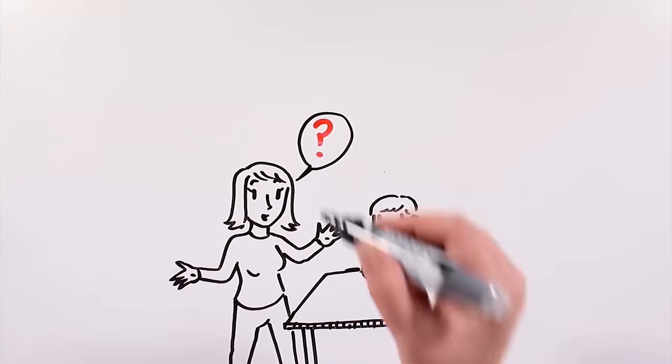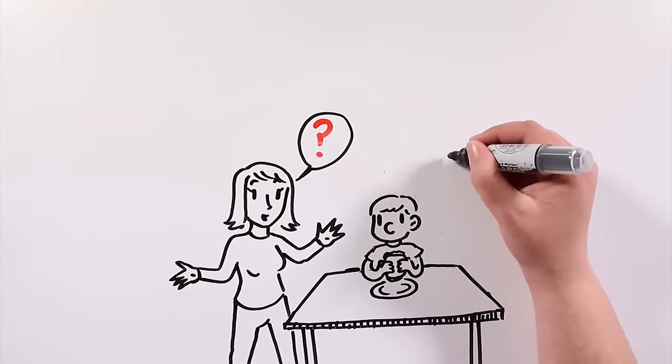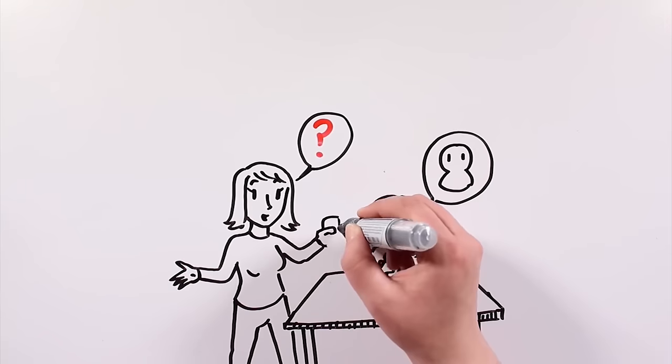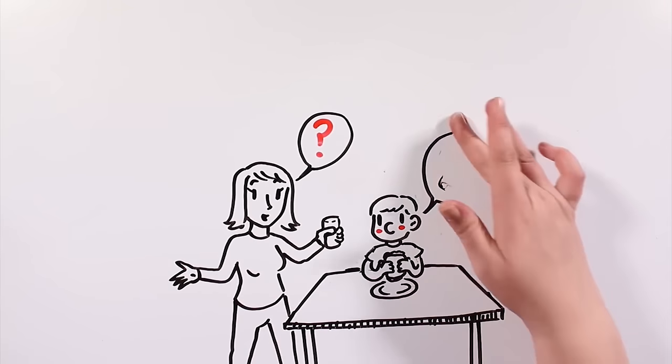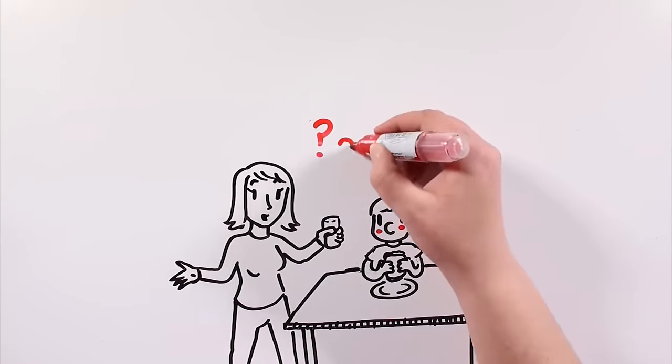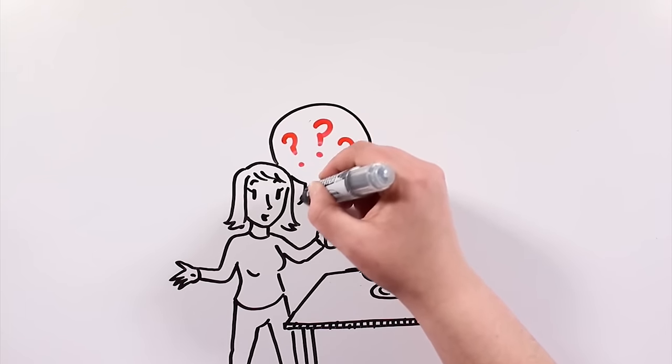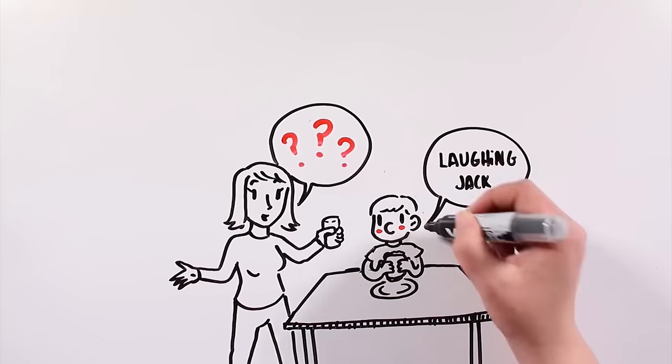I served him some milk, and kept asking. 'Does your friend have a name? Why don't you ask him if he wants to come eat with us?' James looked at me for a moment, before answering. 'His name is Laughing Jack.' 'Oh really? That's a strange name. And what does your friend look like?'